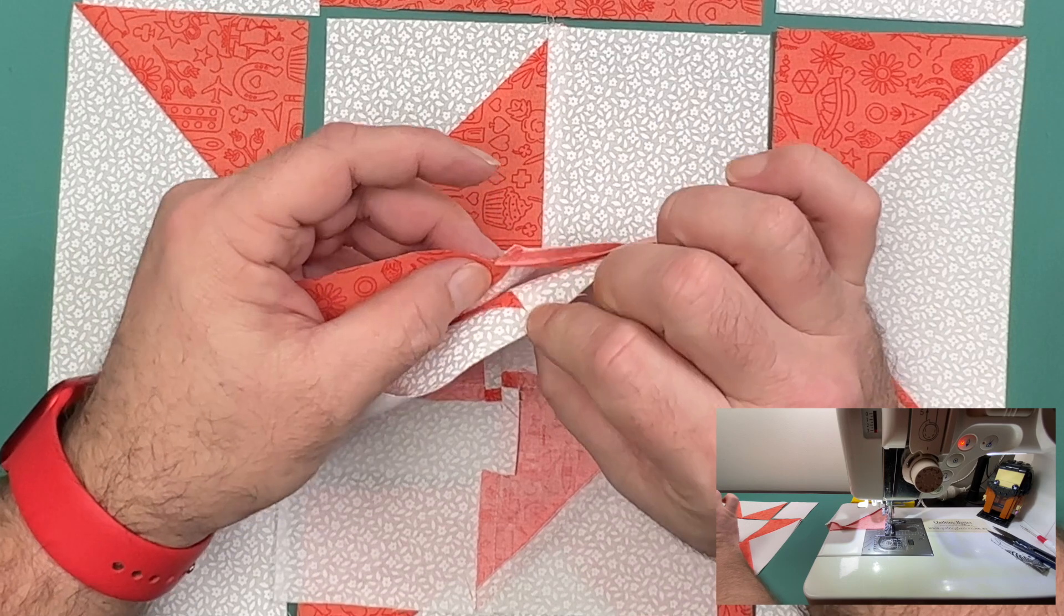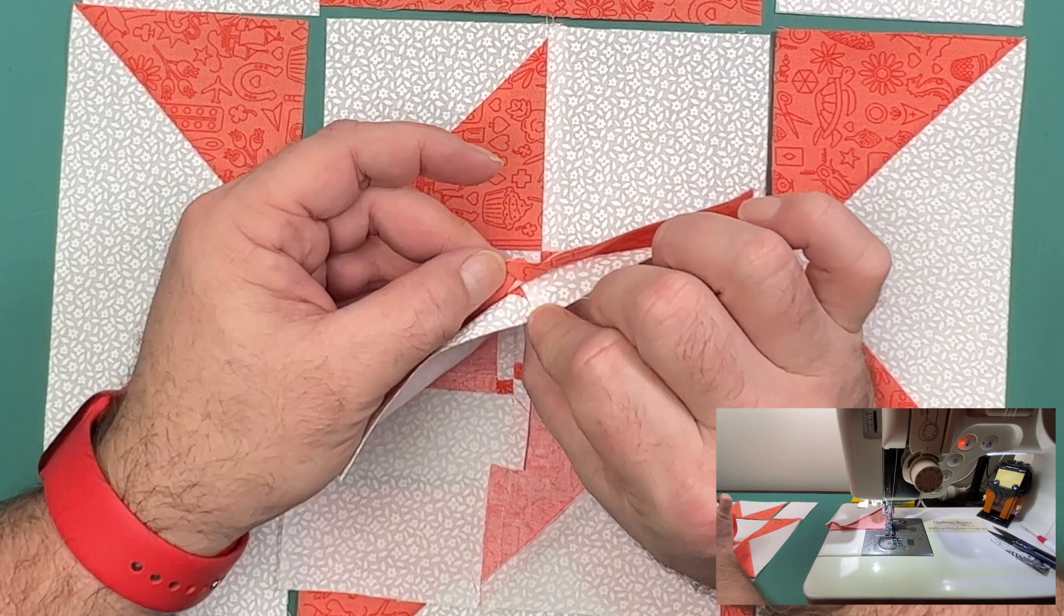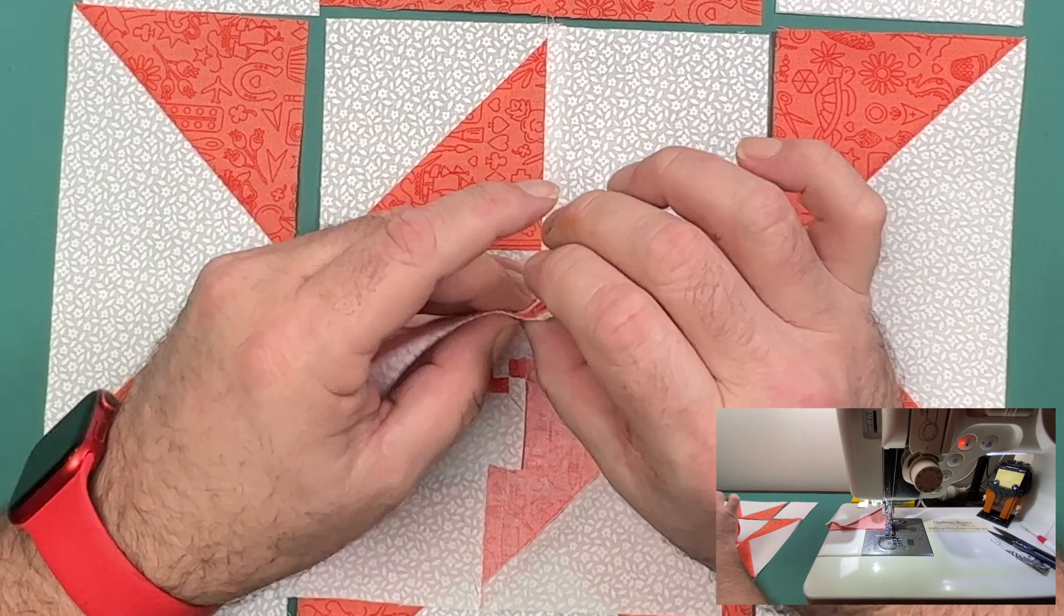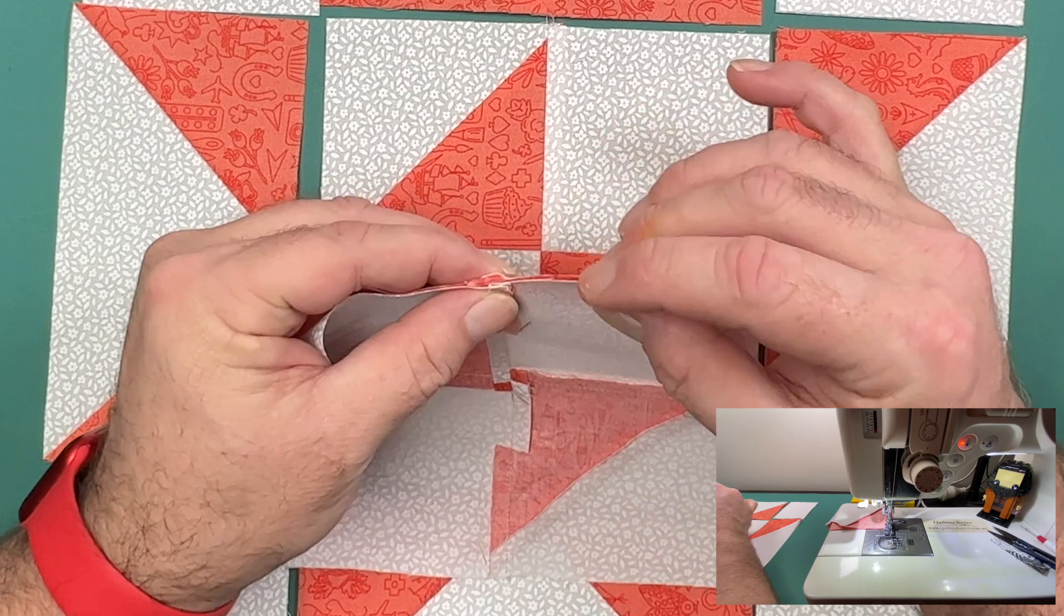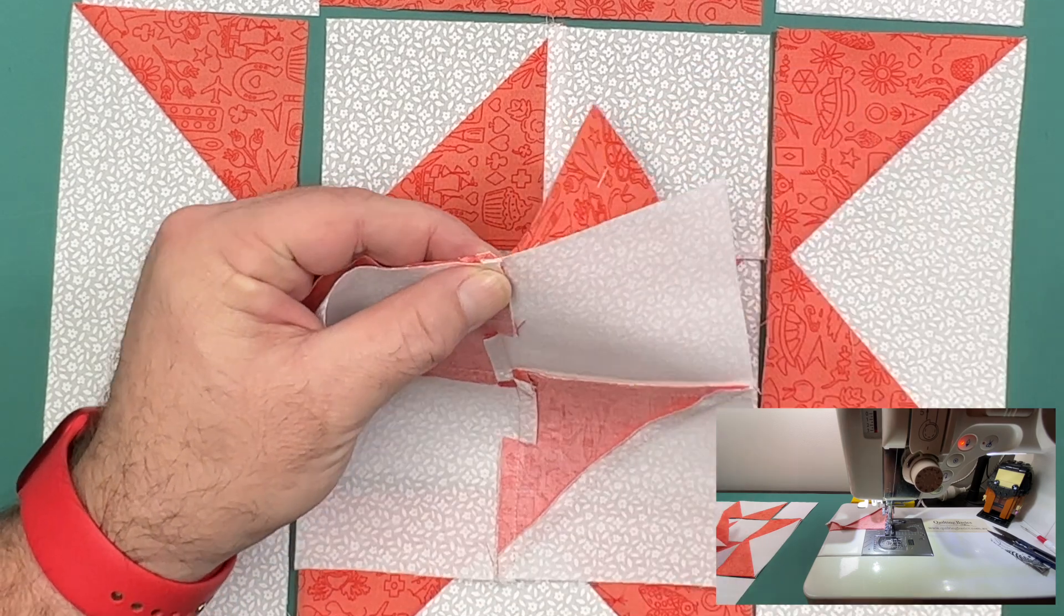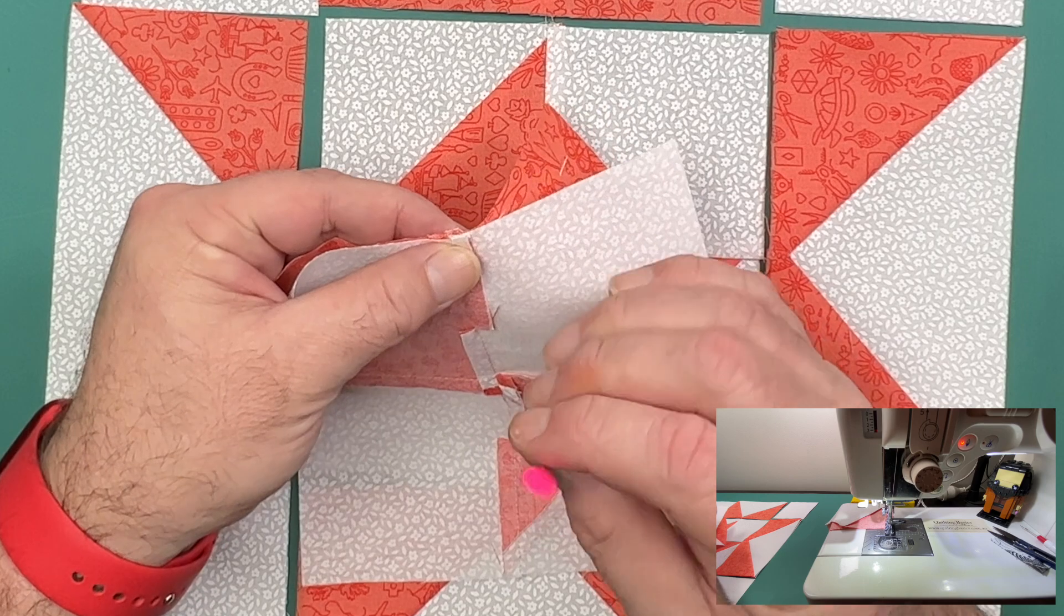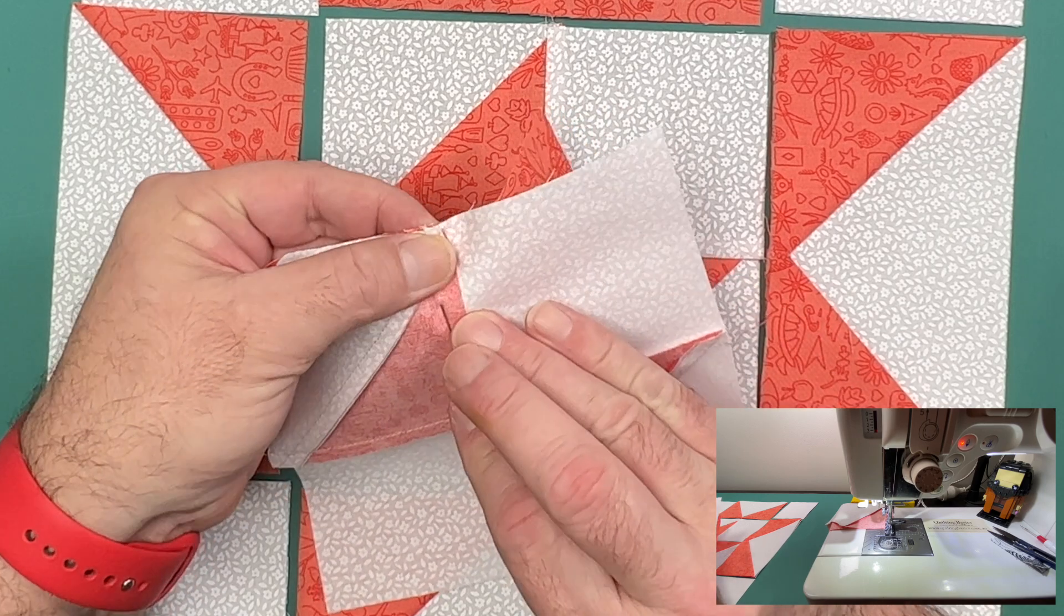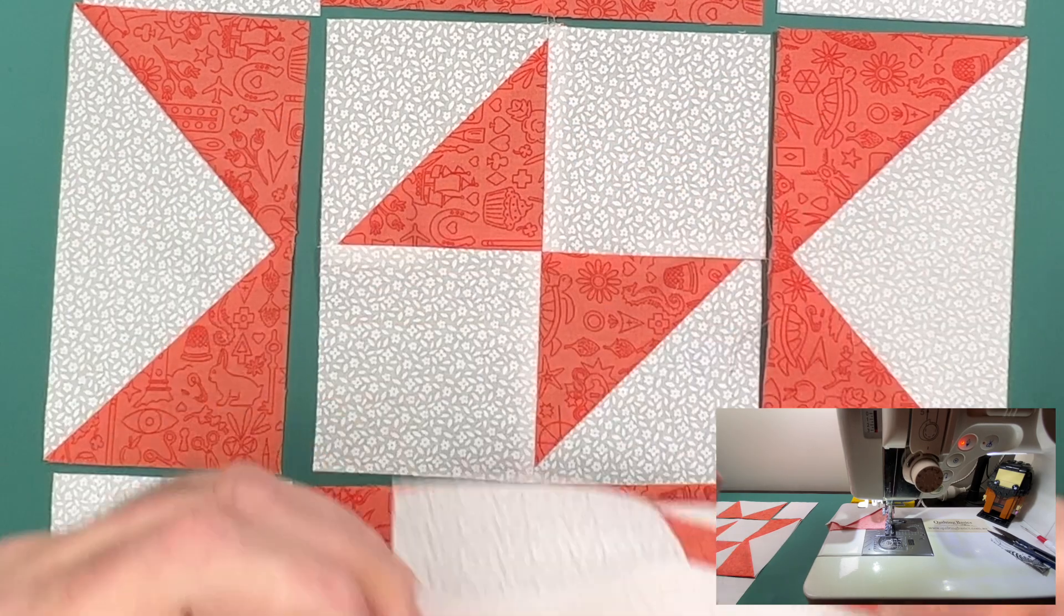Come to lining up this flying geese unit with our half square triangle in the center row. We'll match up those points with that center seam that we have there and secure that with a pin. You could use the hang pin technique here but I find just lining them up and making sure that they match and securing with one pin is fine.